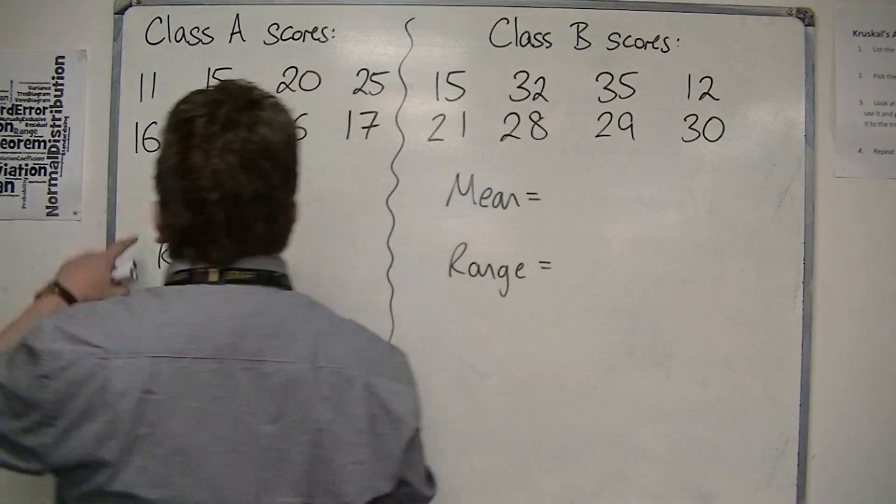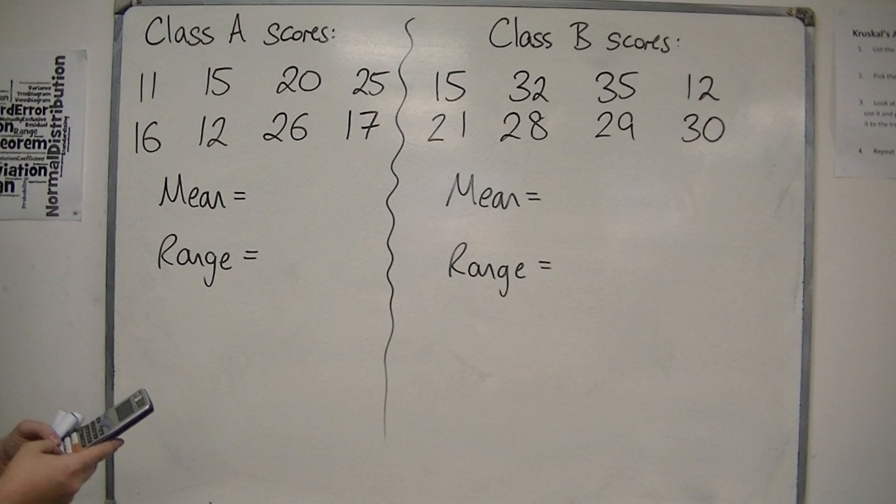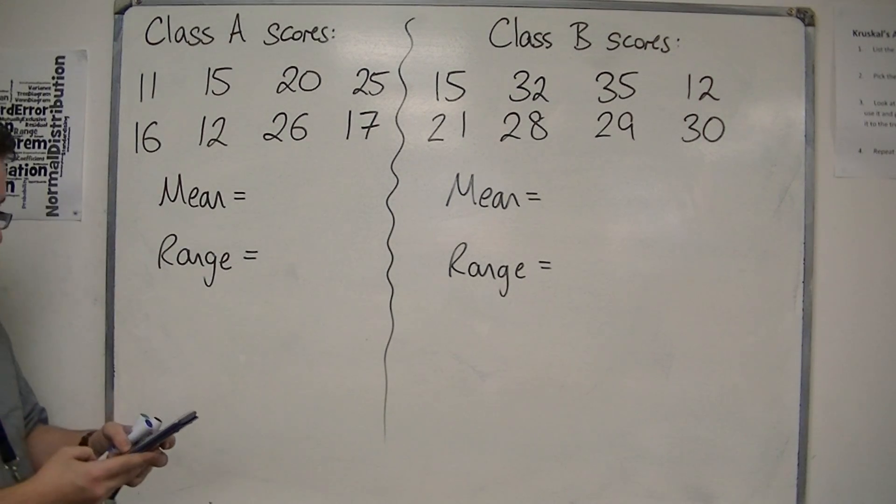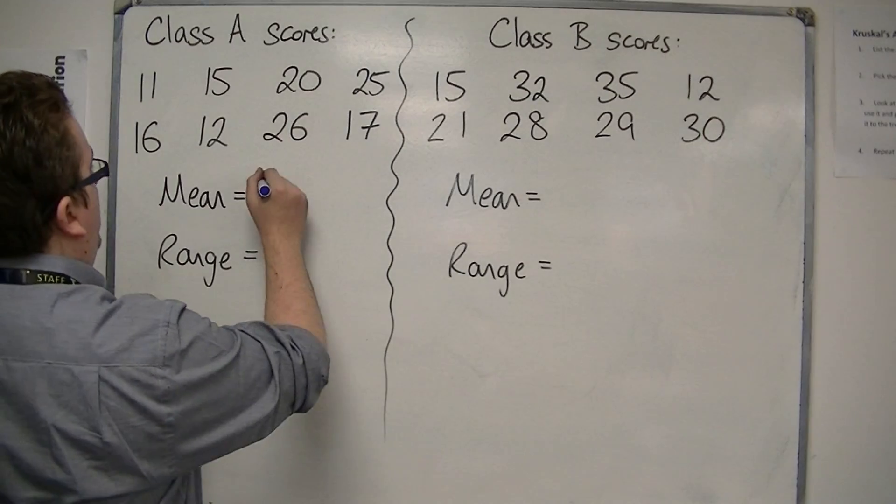So firstly for Class A, we're going to work out the mean, so we add them all together: 11 plus 15, plus 20, plus 25, plus 16, plus 12, plus 26, plus 17, and that's 142. Divide that by 8, and we get 17.75.